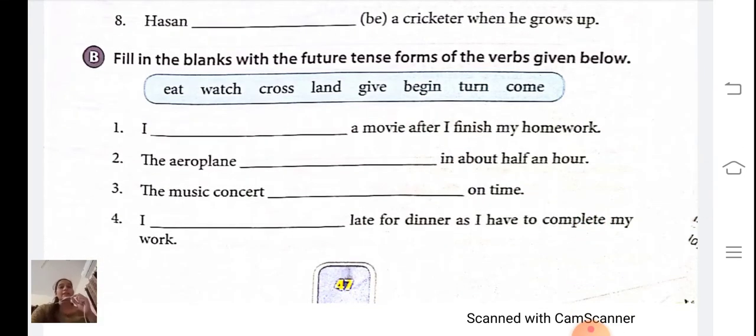Fill in the blanks with the future tense forms of the verbs given below. You can see here students we have one helping box. In the helping box we have some verbs. We have to choose the correct verb for the sentence.